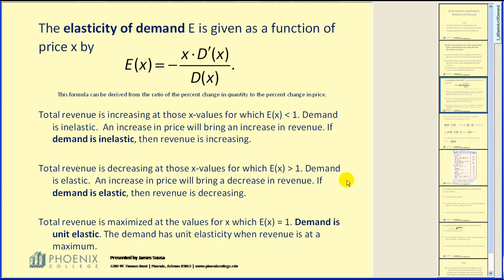Total revenue is decreasing at those x values for which the elasticity is greater than one. Demand is elastic. An increase in price will bring a decrease in revenue. If demand is elastic, then revenue is decreasing.